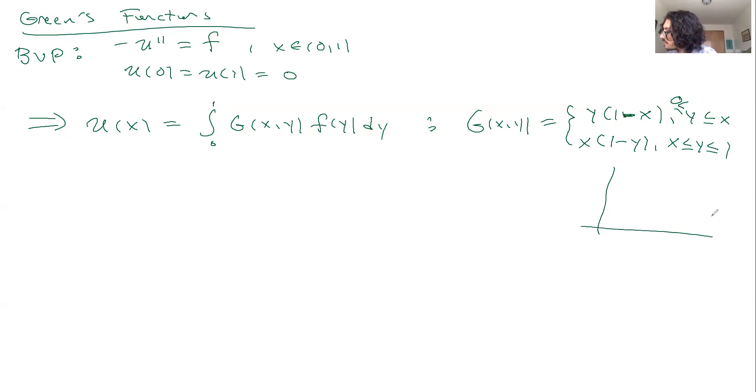And we get this sort of leaning tent shape to it here, where this is x, this is the y-axis, 1, 0 here, and this is our g(x,y). So I'm plotting it as a function of y, but it's a function of two variables there.